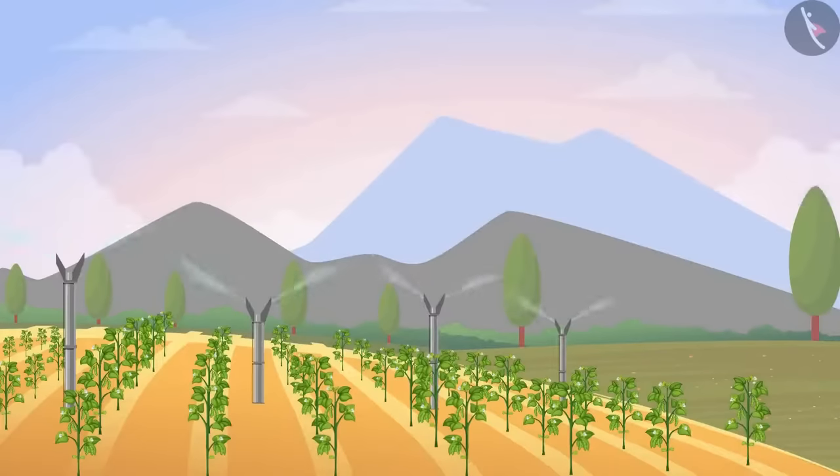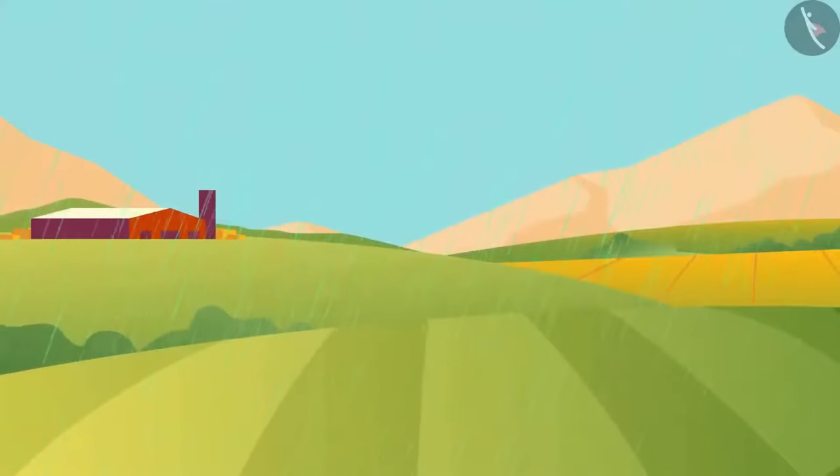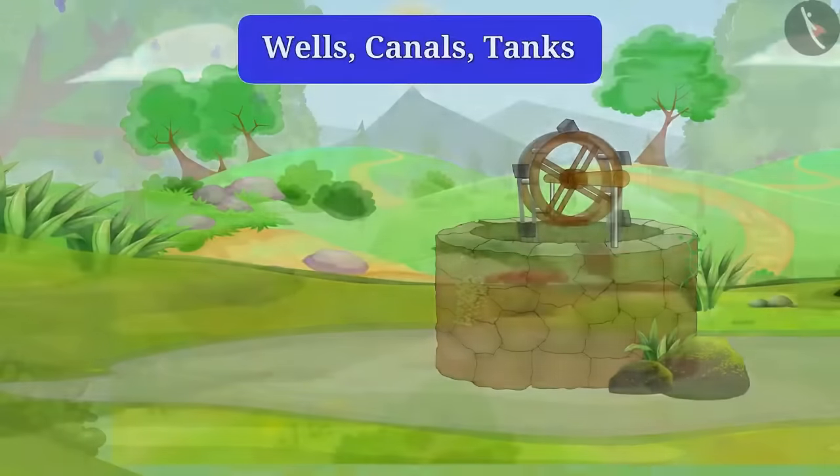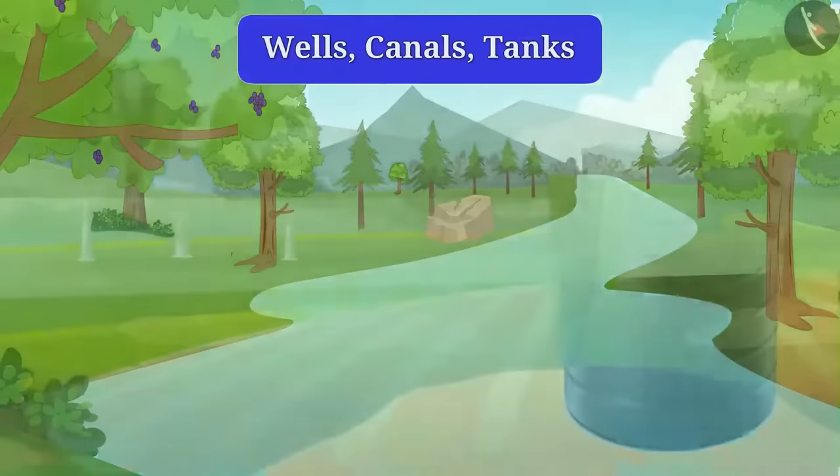Do you know where plants get water from? Yes, plants get water naturally from rain and artificially from wells, canals, tanks, etc.